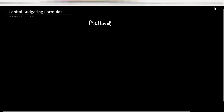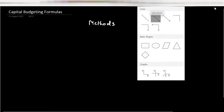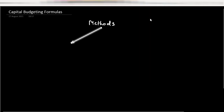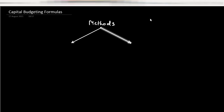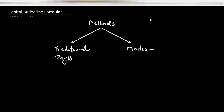We discussed two types of methods. One is the traditional method and the other is the modern method. Under traditional methods we learned two things: the payback period method and ARR, that is the average rate of return, also called the annual rate of return.